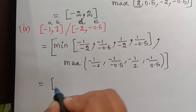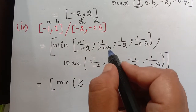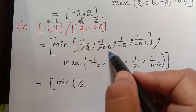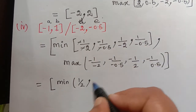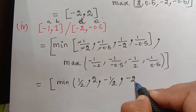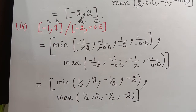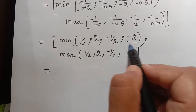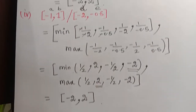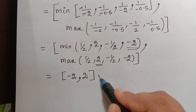Simplifying: the values are 1/2, 2, −1/2, and −2. The minimum of all these values is −2 and the maximum is 2. Therefore, when we divide [−1, 1] by [−2, −0.5], we get the closed interval [−2, 2].